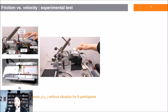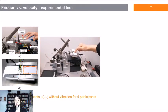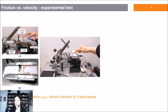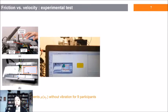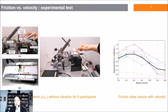We verified this hypothesis experimentally using a longitudinal surface haptic device mounted on a tribometer and measured a group of participants at different velocities. We found that friction does reduce with velocity.